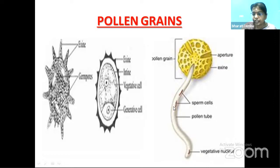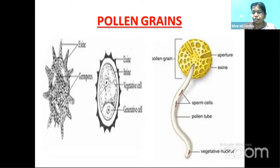The pollen tube has the vegetative cell at its tip, which helps increase the length of the pollen tube as it must deliver the male gametes into the gynoecium. The sperm cells inside the pollen tube move towards its tip. You can observe pollen grains under a microscope: take the anthers of a hibiscus flower, crush them to get yellowish powder, place it on a slide with water, put a coverslip and observe. Pollen grains will be visible beautifully — they are very beautiful to look at.